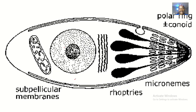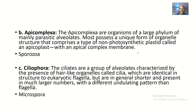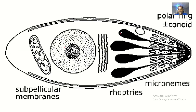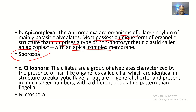Moving to the next one, Apicomplexa: these are organisms of a large phylum of mainly parasitic alveolates. Most of them possess a unique organelle structure that comprises a type of non-photosynthetic plastid called an apicoplast, which is an apical complex membrane. Examples of organisms under Apicomplexa include Sporozoa.